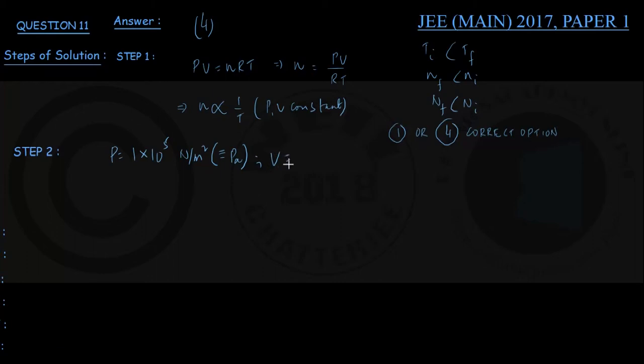The volume of the room, that volume is 30 meter cube. Then we have the initial temperature given to be 17 degree Celsius. Converting into SI unit we can write that will be 17 plus 273 Kelvin, that is 290 Kelvin.